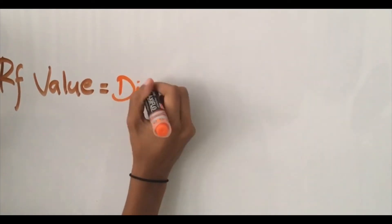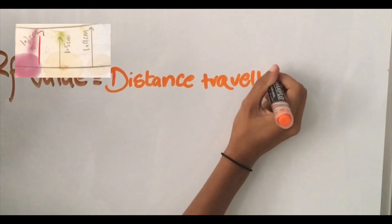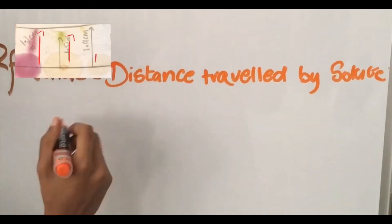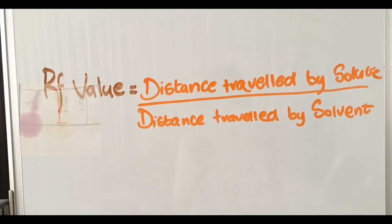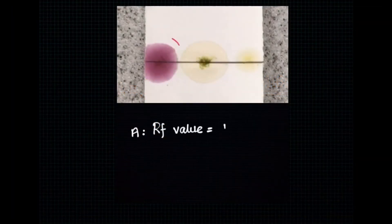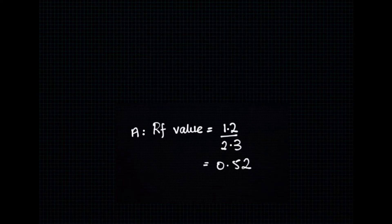Now that we have these two factors, we can measure the RF value, which is the distance travelled by the solute divided by the distance travelled by the solvent. A has an RF value of 1.2 over 2.3, which equals 0.52.